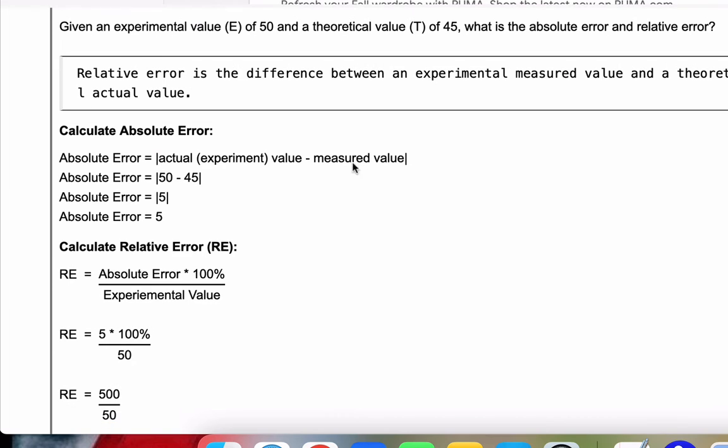So relative error is the difference between experimental, which is also actual, and the theoretical value. First, we need to calculate the absolute error.